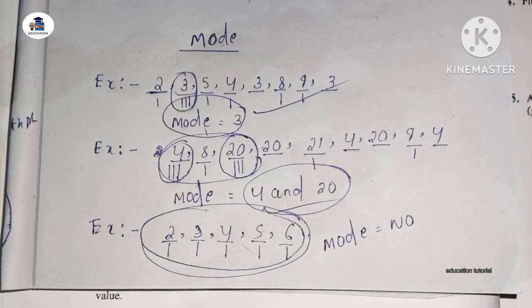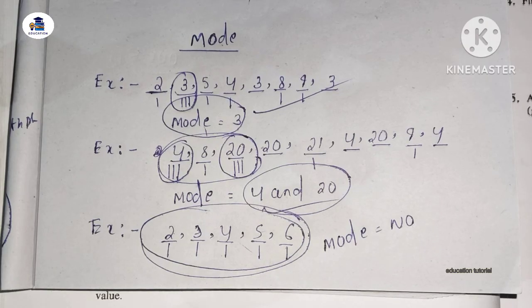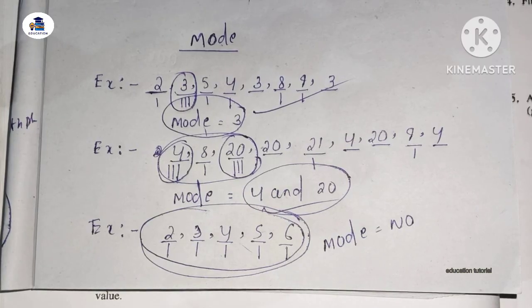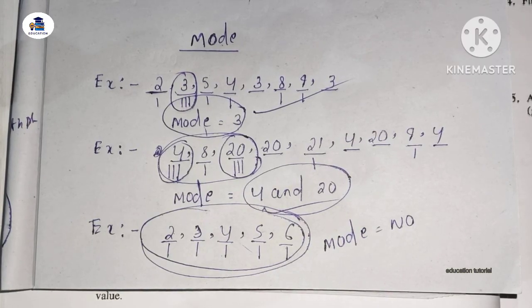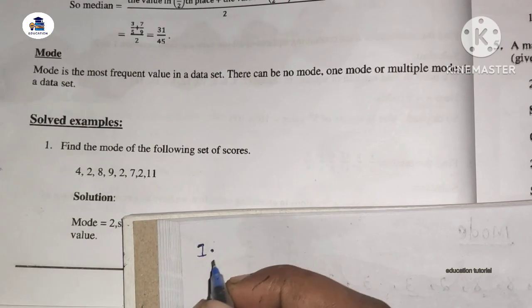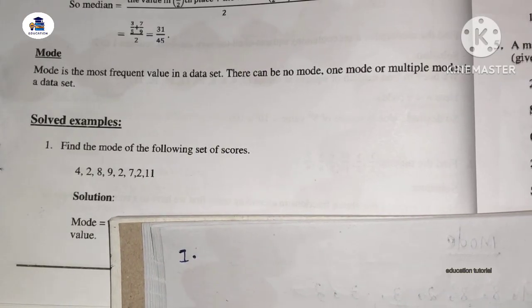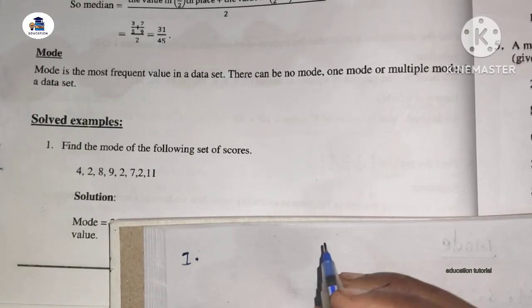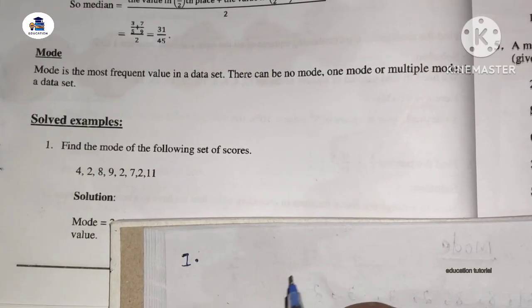Median unit 5 is completed, so I will check the playlist and check the example. First question is: find the mode of the following set of scores.